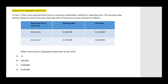Question four: goodwill impairment. I chose this because it recently changed — as of January 2020 you now need to know the new rules. By now you can certainly expect an exam question on them. In year one, Plant Corp acquired Seed Corp in a business combination. Seed has two reporting units. The carrying values and fair values for each of the two reporting units — the Mullen unit and the Barrett unit — are shown at year end.